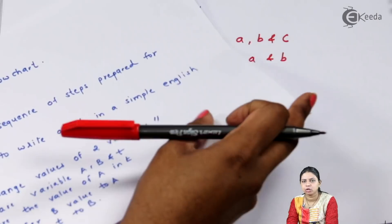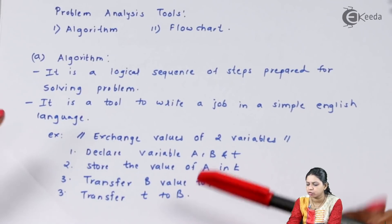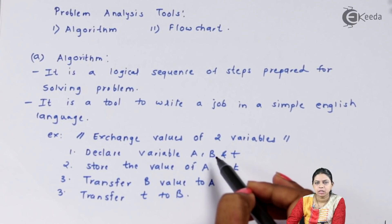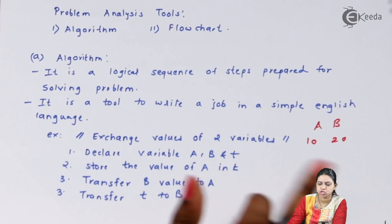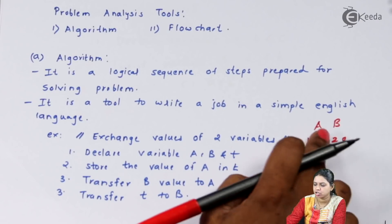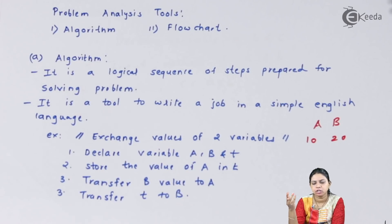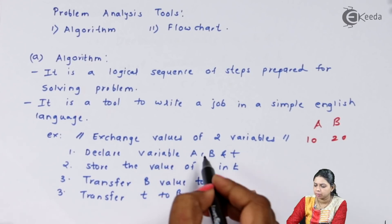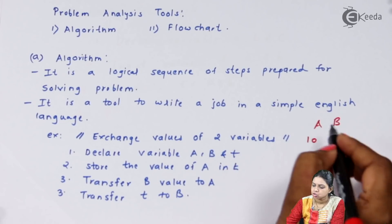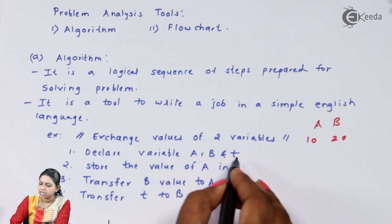Suppose I want to exchange the values of two variables. If I have variables A and B with values 10 and 20, and I want to exchange them, then after exchanging, A will become 20 and B will become 10. For that, I need two variables for the values and one temporary variable. So I will declare three variables: A, B, and T.